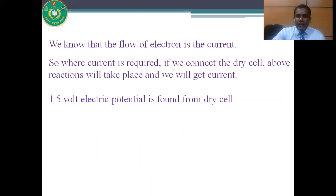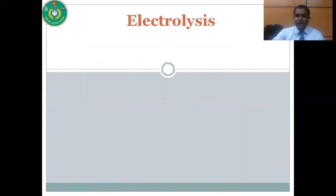So if we need current, we can connect this dry cell. The above reaction will take place and we will get current. A 1.5 volt electric potential is obtained from a dry cell.